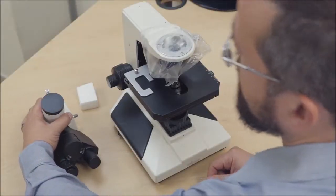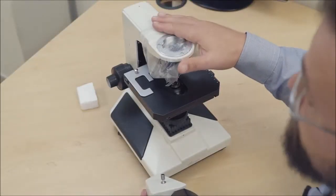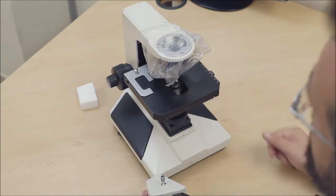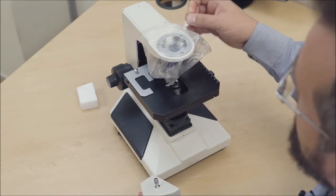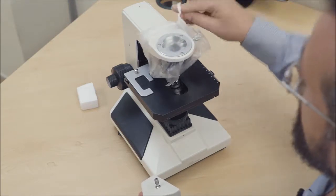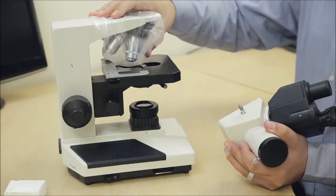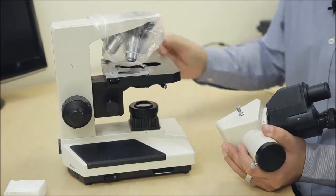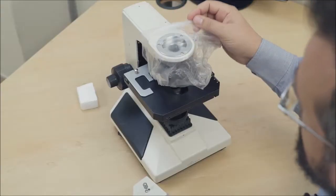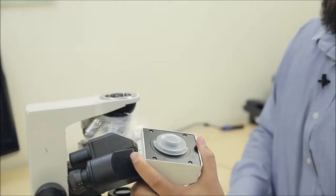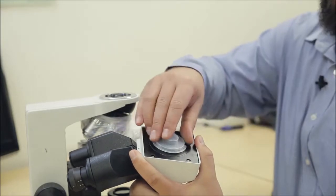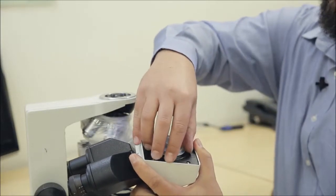Then we're going to attach the trinocular head onto the microscope body. So firstly we'll remove the protective plastic from the top of the microscope body. This simply just slips off and it really is just to protect the objective lenses from any dust getting into the system. So we'll remove that, and there's a protective plastic cap at the base of the trinocular head that we also need to remove.